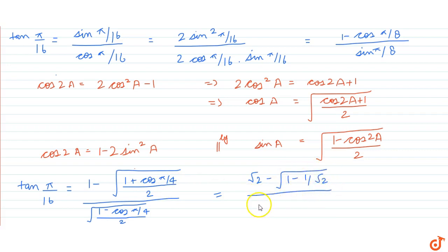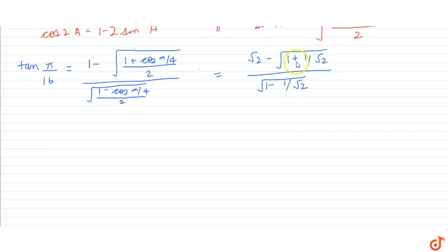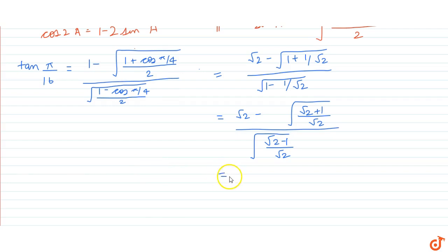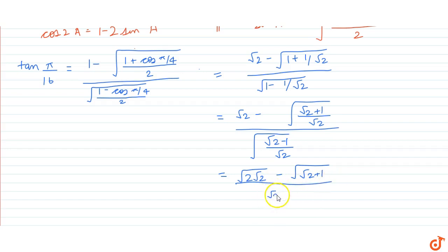I made a mistake here — we have plus 1 by root 2 in the numerator. So solving further, we get the square root of (root 2 minus root 2 plus 1) over root 2, divided by the square root of (root 2 minus 1) over root 2. This equals the square root of (2 root 2 minus 2 root 2 plus 1) divided by the square root of (root 2 minus 1).